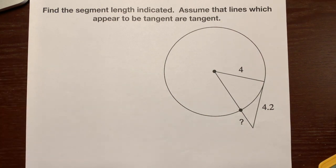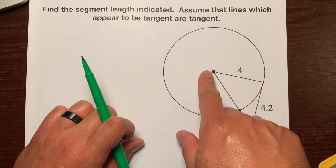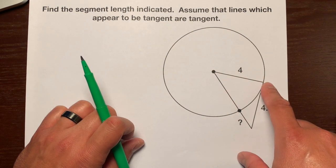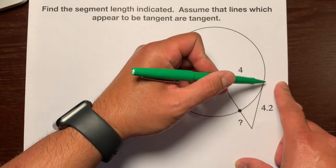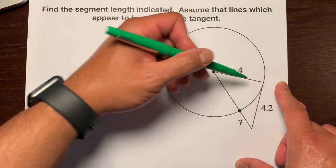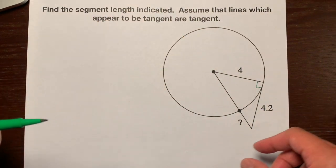So if you guys remember, when a line is tangent to a circle and a radius intersects that tangent line at the point of tangency where the line touches the circle, then the radius and the tangent line are perpendicular. Remember, perpendicular means that they make right angles. So this is a right angle.